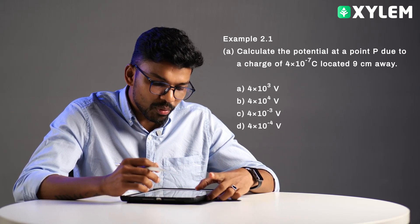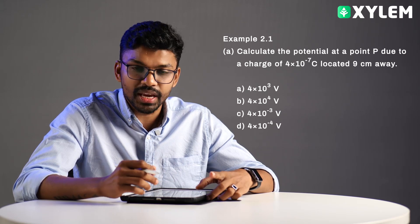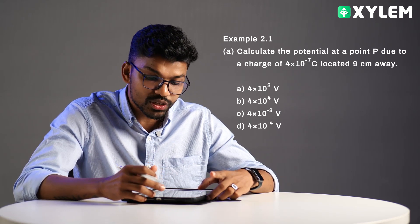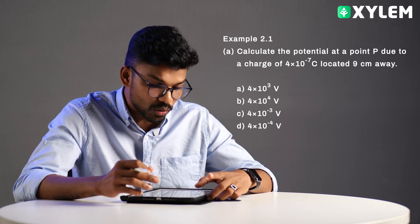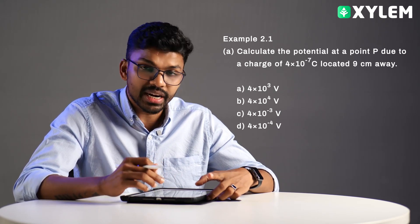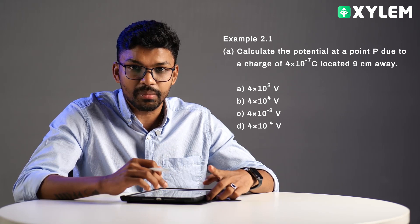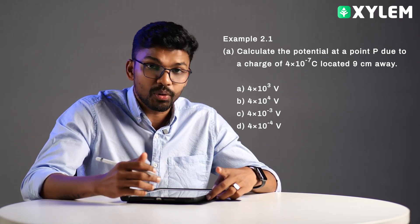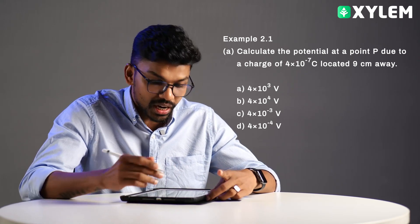The question is: we have to calculate the potential at the point P due to a charge of 4×10⁻⁷ Coulomb located at 9 cm away. We have to find the potential at that point.